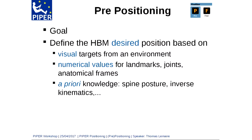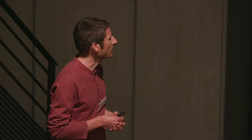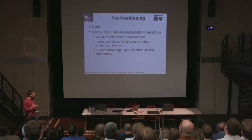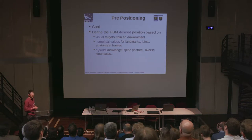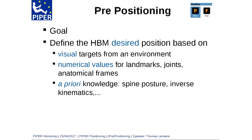I will present some work about the pre- and fine positioning modules in the Piper application. The goal of this module is to help you define your desired position for your HBM. You can use visual targets, numerical values for joint angles, landmark positions, or anatomical frame orientations like for the pelvis. You can also use a priori knowledge about spine posture, as will be demonstrated later.